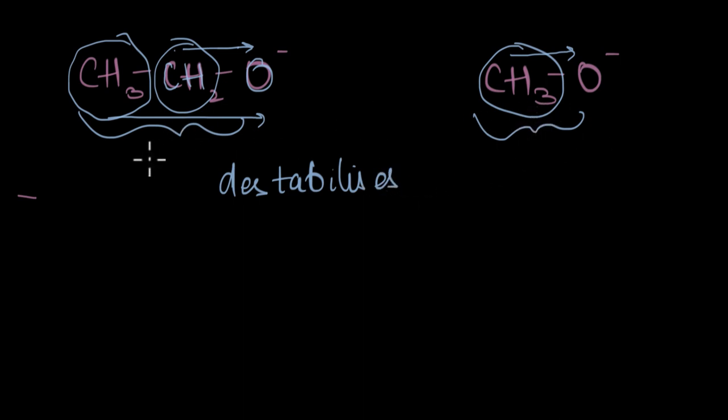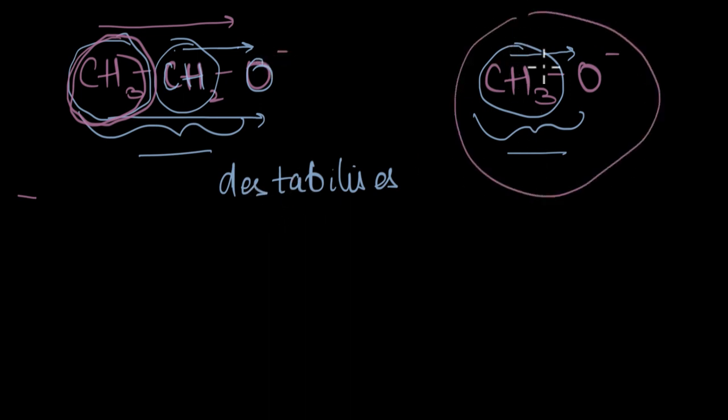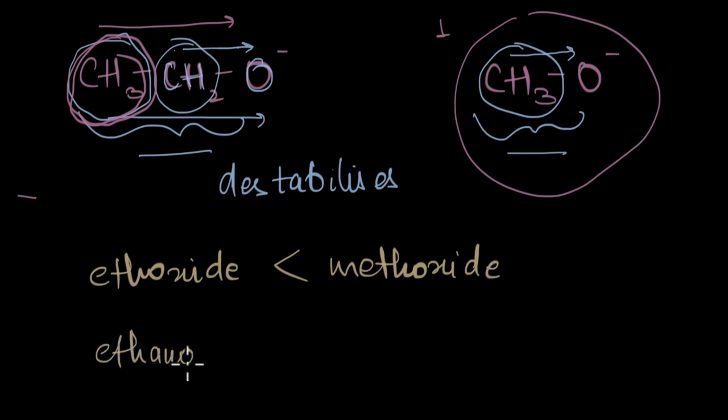Because inductive effect is present on both the sides, we should go ahead and check which molecule is more destabilized than the other. My hunch is that because there is an extra methyl group which donates extra electron clouds towards oxygen, it is more destabilized than this molecule where only one methyl group is donating its electron cloud. Because ethoxide is less stable than methoxide, it's safe to say that ethanol is a weaker acid than methanol.